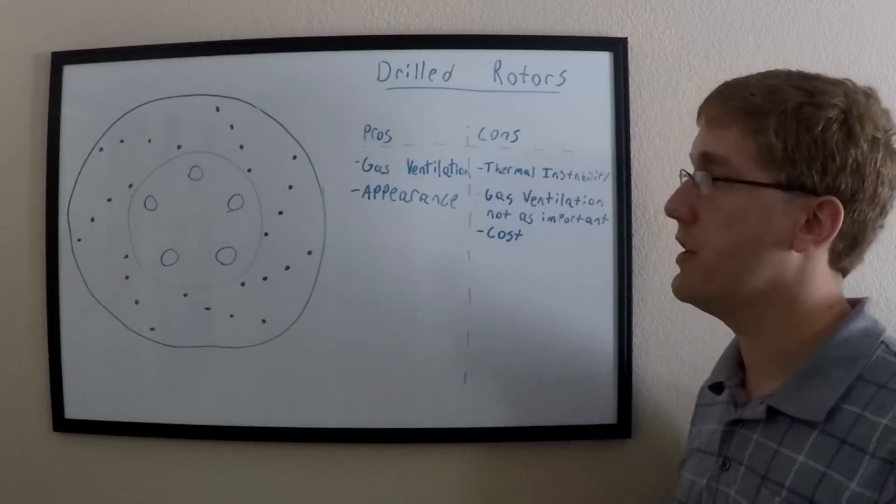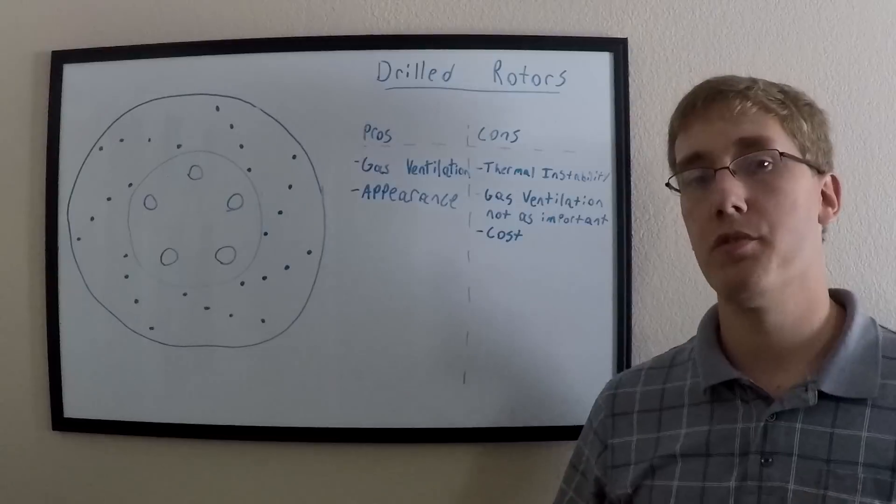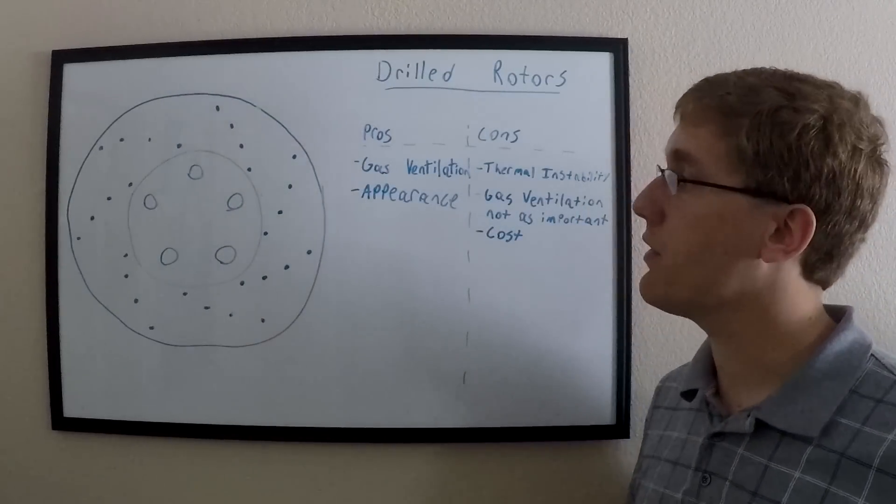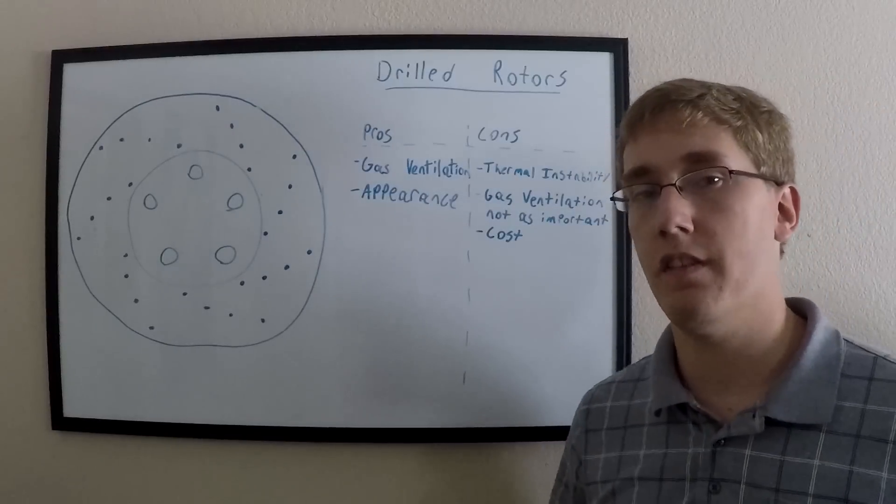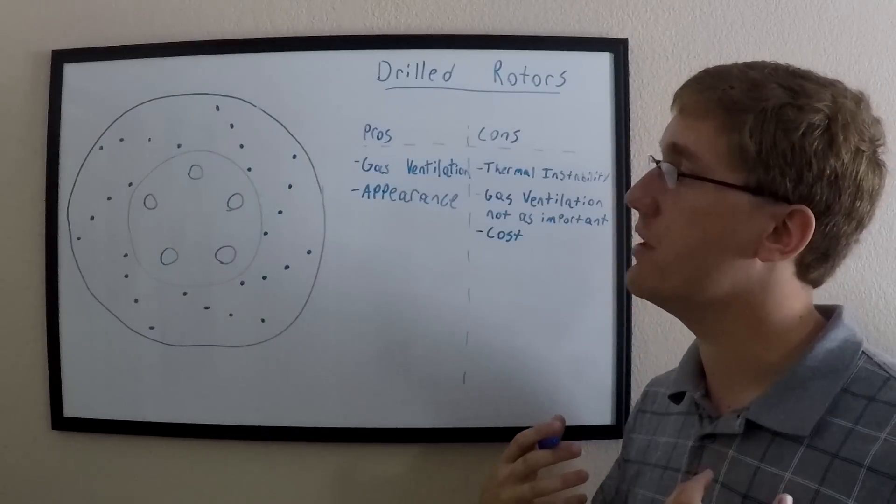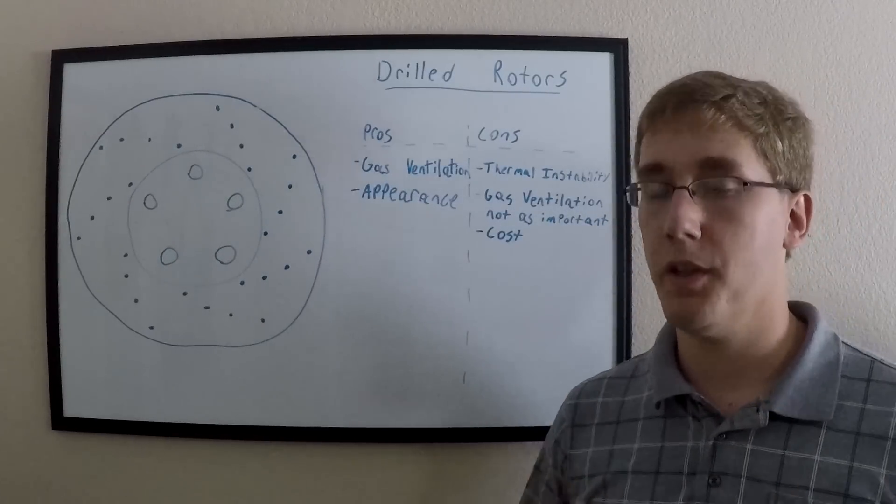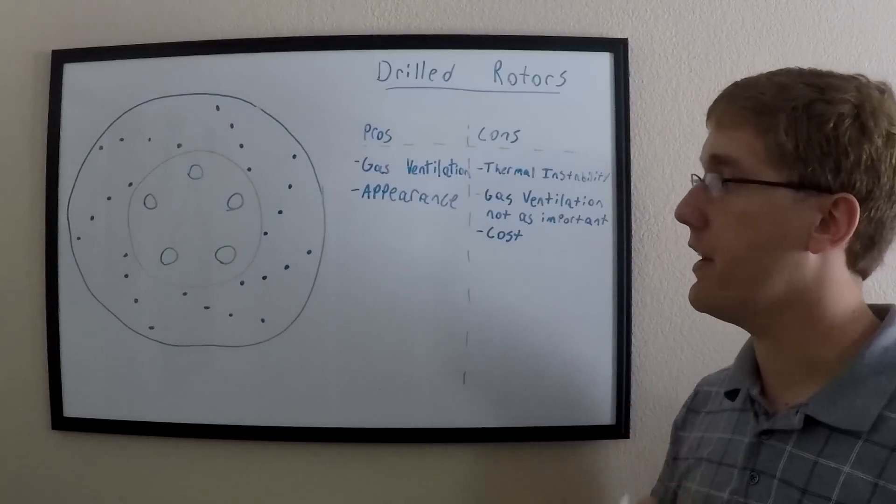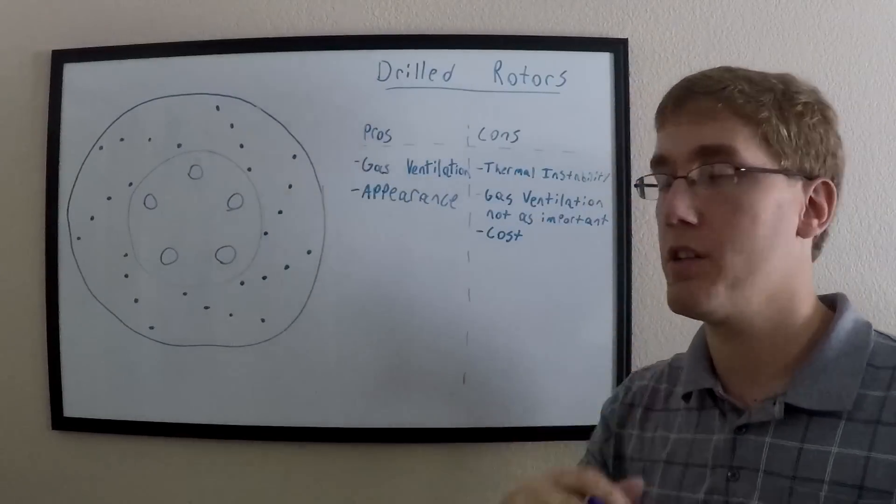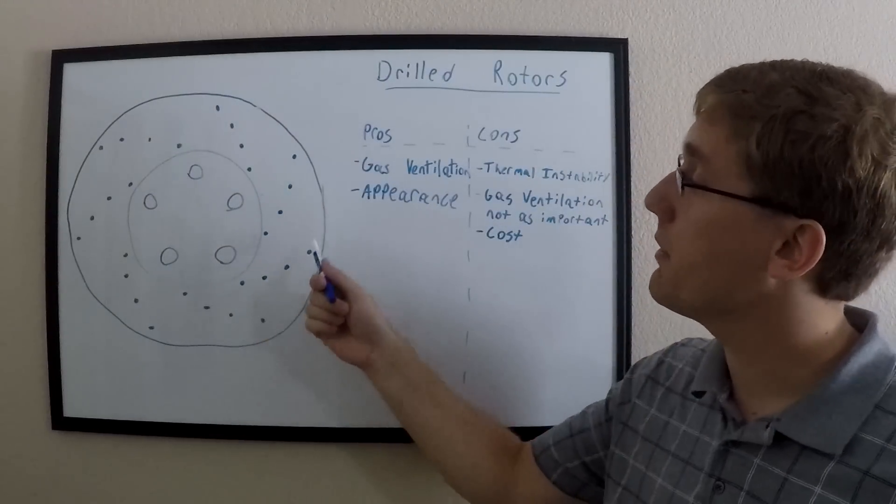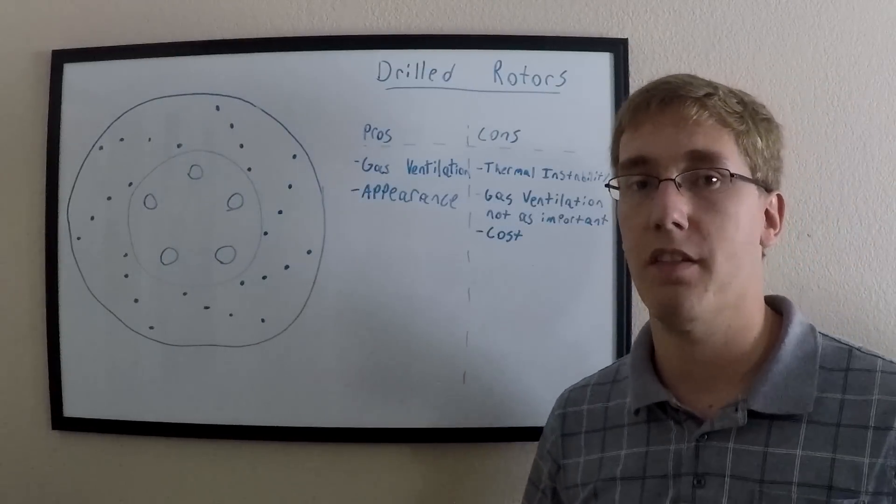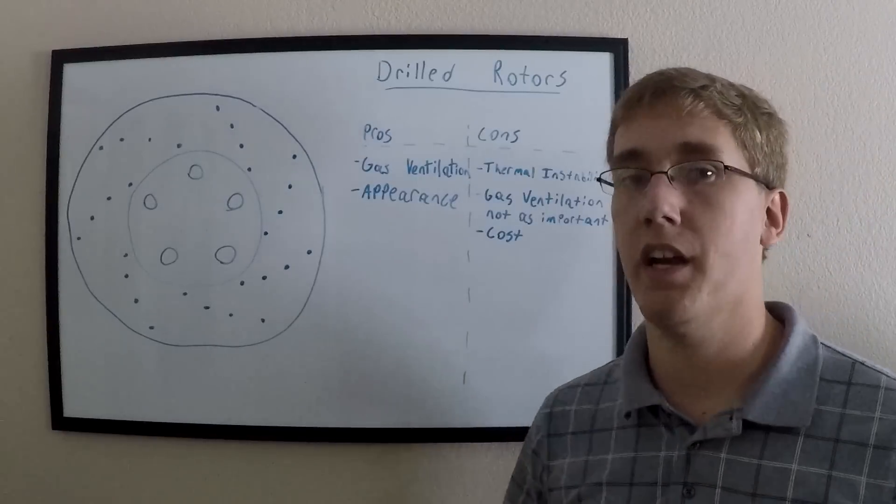The first type of disc rotor that we're going to talk about today are drilled rotors. With drilled rotors you have a bunch of these holes that have been drilled through the face of the disc, and we first saw this in the 1950s as engineers were looking for a way to be able to ventilate the gases that buildup due to the use of asbestos pads. When asbestos pads got really hot they would generate a thin layer of gas that would sit between the rotor and the pad, which meant you got a lot of brake fade. By drilling a bunch of holes in the rotor, you've given those gases a way to be able to escape into the ventilation veins in the disc.